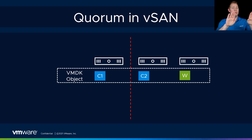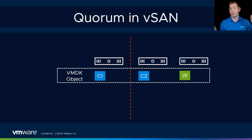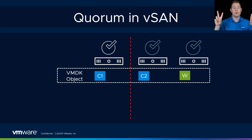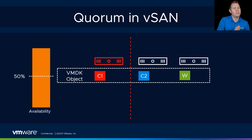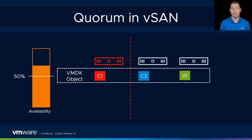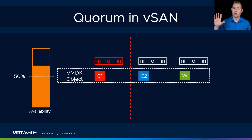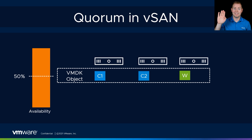Our witness component acts as a tiebreaker. Let's say host 1 and host 2 are split, but host 3 has our witness component. You can think of it like votes — one vote on one side and two votes on the other. Because we have two votes, that's where our VM should be running. With vSAN, we have to have more than 50% of our components available at any point in time, whether that's data or witness. So the single host is at 33%, while the side with one data component and one witness is at 66% — that's where our VM should run.